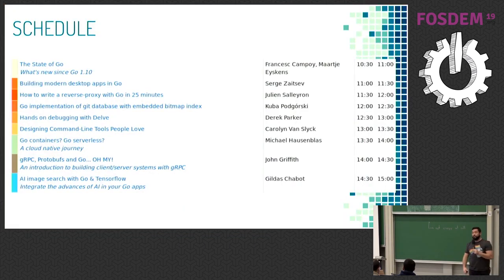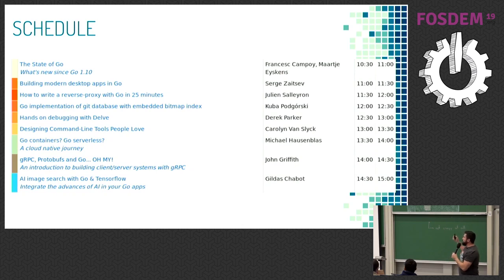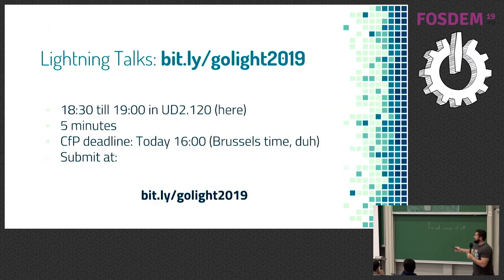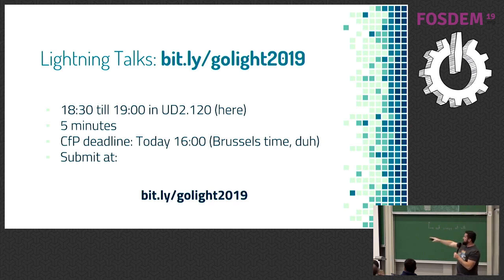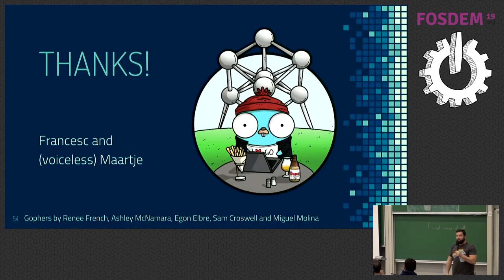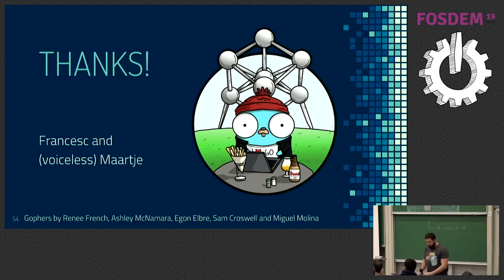Today we have many talks — this was the first one. The next speaker is Serge Zaitsev, followed by many more. Stay in the room if you want to attend because getting back in will be hard. At the end we have lightning talks — register at bit.ly/golight2019. The deadline is 4 p.m., and each talk is five minutes — actually four minutes and thirty seconds, after which you will be cut off.